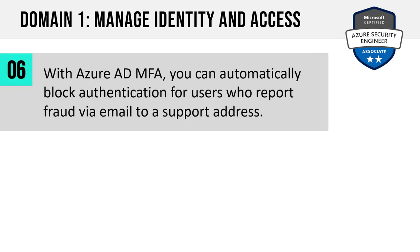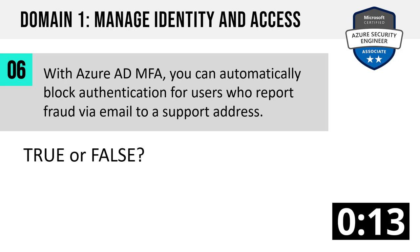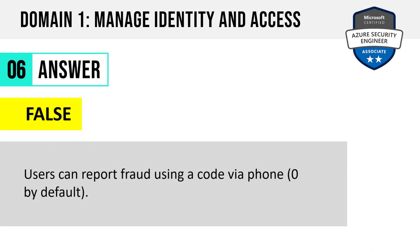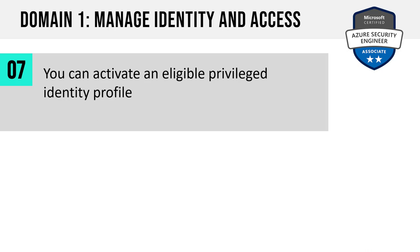Question 6. With Azure Active Directory multi-factor authentication, you can automatically block authentication for users who report fraud via email to a support address. True or false? The answer is false. Users can report fraud, but they do so using a code via phone. The code is zero by default, although you can change that.